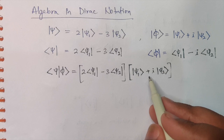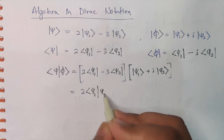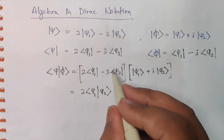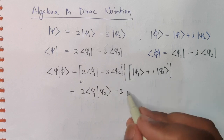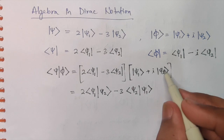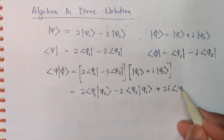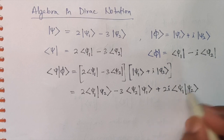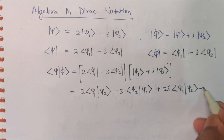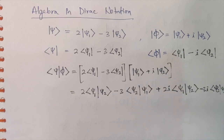Now I have to take these term by term. Taking the first pair: 2·bra-Psi-1 with ket-Psi-1 gives bra-Psi-1 ket-Psi-1. Then taking minus 3·bra-Psi-2 with ket-Psi-1 gives minus 3 times bra-Psi-2 ket-Psi-1. Then 2·bra-Psi-1 with i·ket-Psi-2 gives plus 2i times bra-Psi-1 ket-Psi-2. And finally minus 3·bra-Psi-2 with i·ket-Psi-2 gives minus 3i times bra-Psi-2 ket-Psi-2.